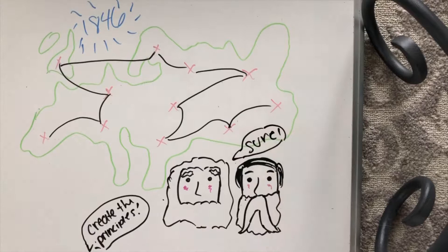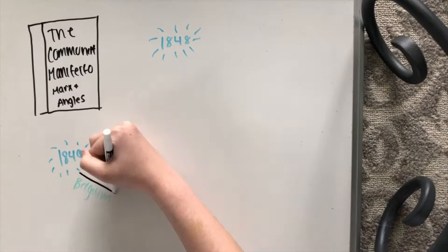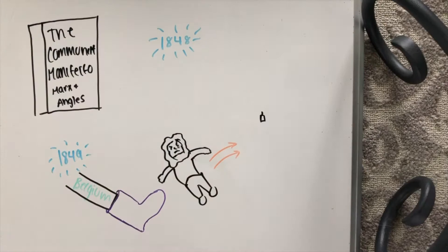The Communist Manifesto, as our work is now commonly known, was published in 1848, and shortly after in 1849, I was expelled from Belgium. I went to France, anticipating a socialist revolution there, but was shocked to be deported from there as well.